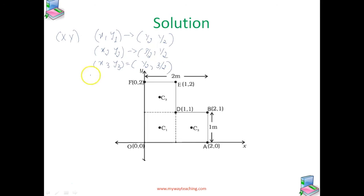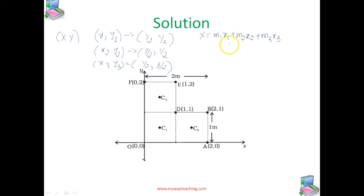We can find the X-coordinate of the center of mass using the formula: X = (M1·X1 + M2·X2 + M3·X3) / (M1 + M2 + M3).